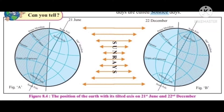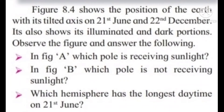Figure 8.4 also shows the illuminated and dark portions of the earth. Observe the figure and answer the following questions. In Figure A, which pole is receiving sunlight? The north pole is receiving sunlight.